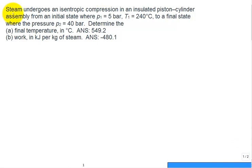Let's solve this problem. We have steam that undergoes an isentropic compression in an insulated piston-cylinder assembly from an initial state where P1 is 5 bar and T1 is 240°C to a final state where the pressure is 40 bar. We need to determine the final temperature and the work in kilojoules per kilogram of steam.